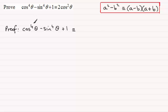Cos to the power 4 of theta is the same as cos squared theta all squared and here we've got minus sine squared theta all squared. So we can factorize these two terms.